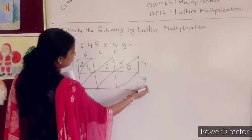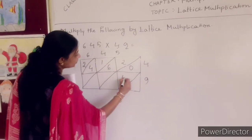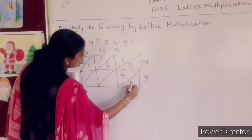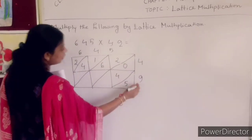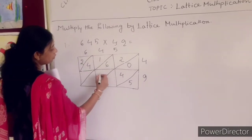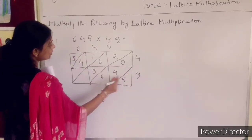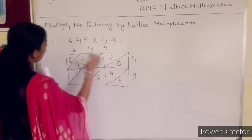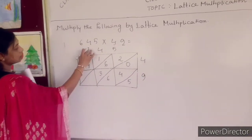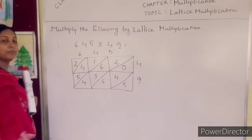Now first you multiply this number with 4: 4 into 5 is 20, 4 into 4 is 16, 4 into 6 is 24. After completing 4, you multiply with 9: 9 into 5 is 45, 9 into 4 is 36, 9 into 6 is 54.